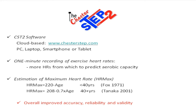The estimation of maximum heart rate is always an issue, and there are many different equations used to identify more accurately what a person's maximum heart rate is. In CST 2, we maintain 220 minus age — the Fox equation — for under 40s, but for participants who are over 40, the equation used is the Tanaka equation from 2001: heart rate max equals 208 minus 0.7 times age. This is intended to improve overall accuracy, reliability, and validity.